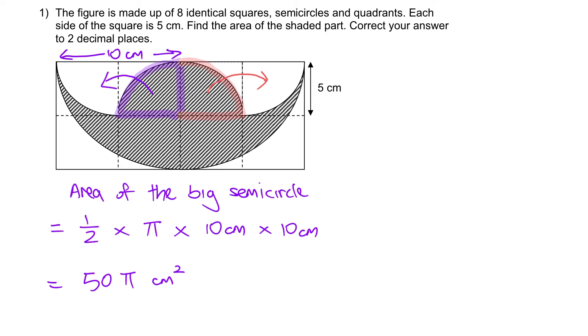Moving on, now I am going to figure out the area of the two squares. Area of two squares. And that will be 5 times 5 times 2.